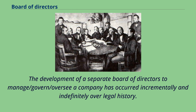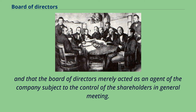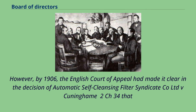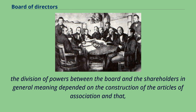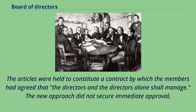The development of a separate board of directors to manage, govern, and oversee a company has occurred incrementally over legal history. Until the end of the 19th century, it was generally assumed that the general meeting was the supreme organ of a company and that the board of directors merely acted as an agent of the company subject to the control of the shareholders in general meeting. However, by 1906, the English Court of Appeal had made it clear in the decision of Automatic Self-Cleansing Filter Syndicate Company Limited v. Cunningham that the division of powers between the board and the shareholders depended on the construction of the articles of association. The articles were held to constitute a contract by which the members had agreed that the directors and the directors alone shall manage.